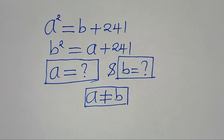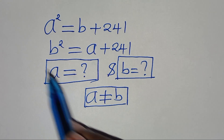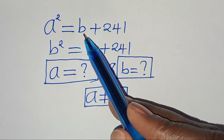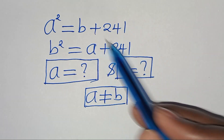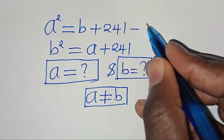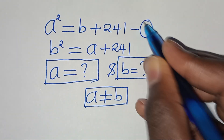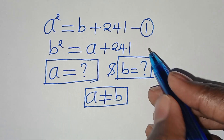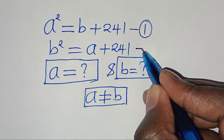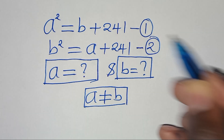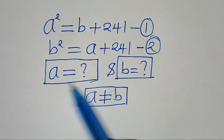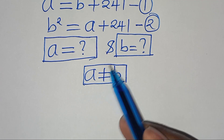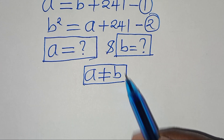Welcome to this algebra problem. We have a squared equals b plus 241 — let's call this equation 1. Then b squared equals a plus 241 — let's call this equation 2. We want to find the values of a and b, given that a is not equal to b.